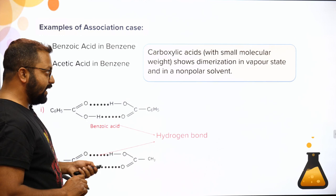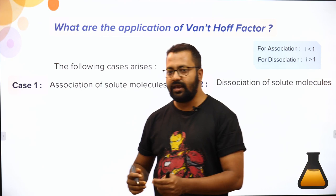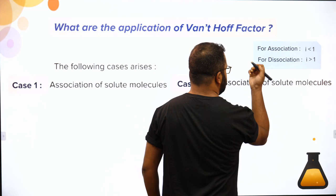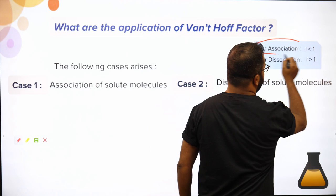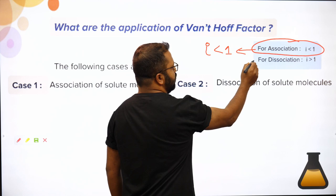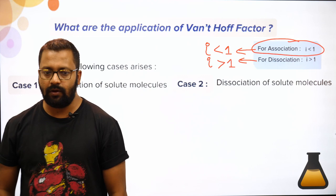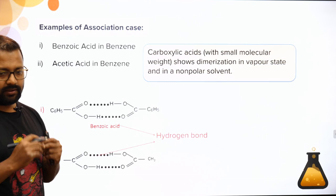An important conclusion: whenever association takes place, the Vant Hoff factor i will be less than one. Whenever dissociation takes place, i will be more than one. For association i < 1; for dissociation i > 1.